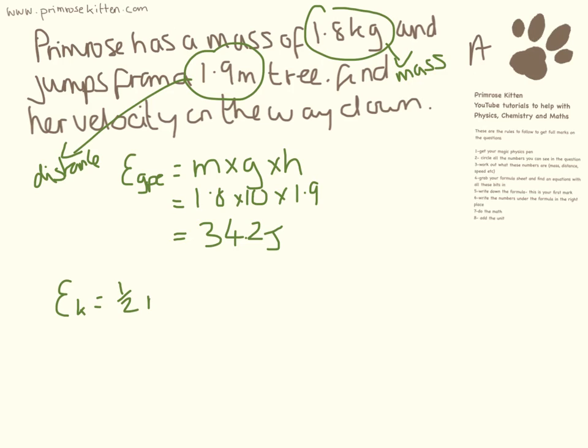Now we can use the equation for kinetic energy, half, mass, velocity squared, to work this out. Because we know how much energy she had. We know the half. We know her mass is 1.8. And then we can work out the velocity squared. Now I like to do the maths bit first and then do the rearranging. But if you want to do it the other way around, then it's absolutely fine. I'm just going to move up here to give myself a bit of space.